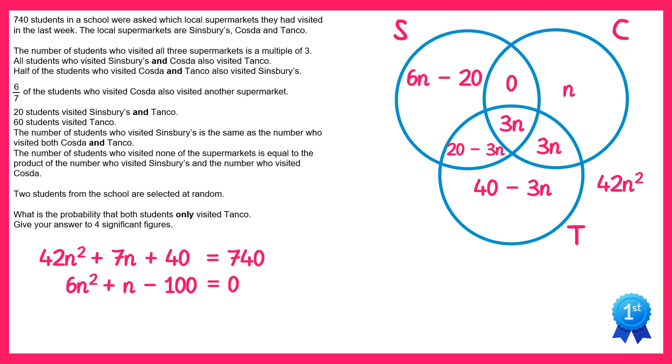This quadratic will factorise. It gives you 6n plus 25 and n take away 4 equals 0, and that gives you two solutions. Now the first of those solutions would be negative so we can disregard that and just look at the second one. The second one would be n equals 4.